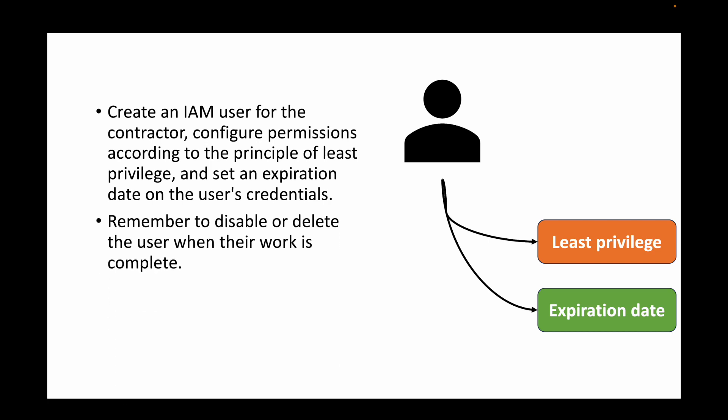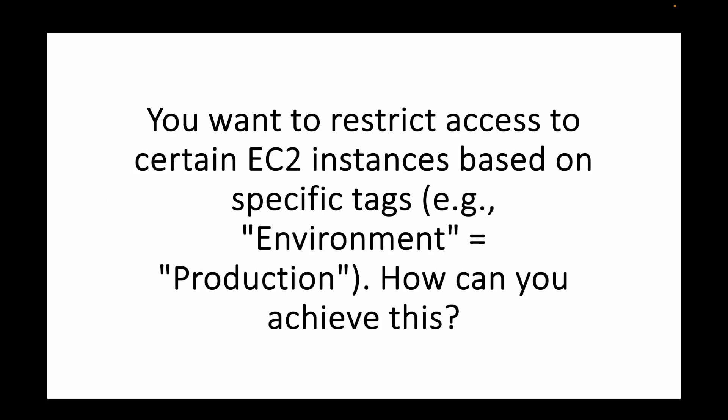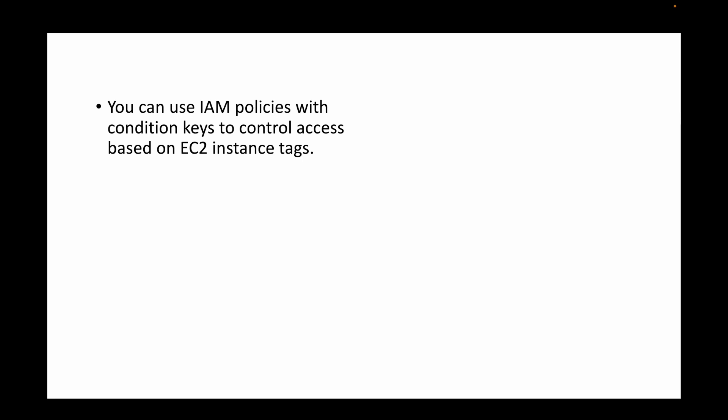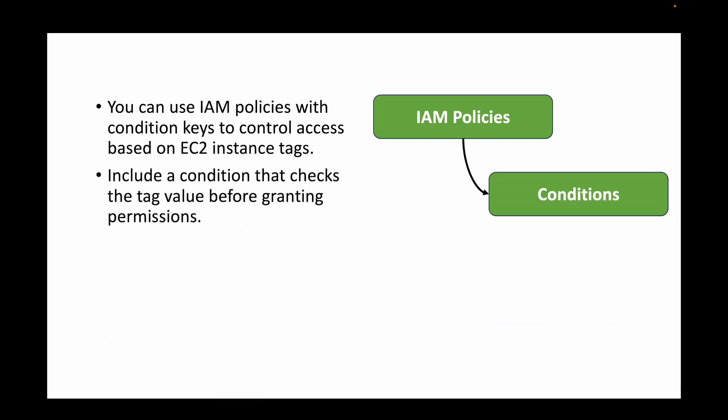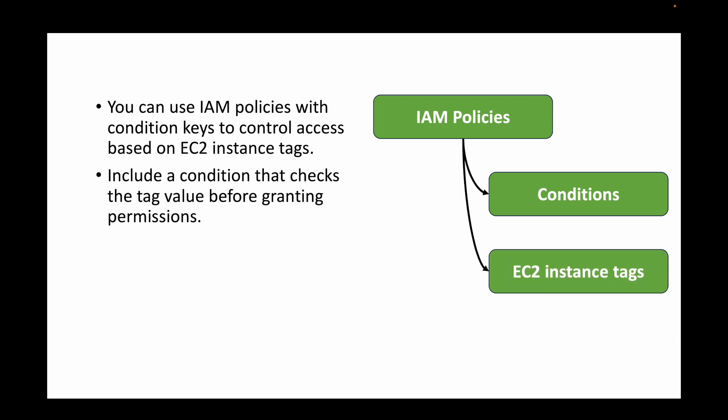Remember, once the user is done working, disable or delete the user when their work is complete. The next question is: you want to restrict access to certain EC2 instances based on specific tags — for example, EC2 instances tagged 'Environment = Production.' For this we use IAM policies with conditions, defining what the IAM policy allows. We define conditions specifying that only EC2 instances with the respective tags will be accessible, then attach this IAM policy to the user or role.